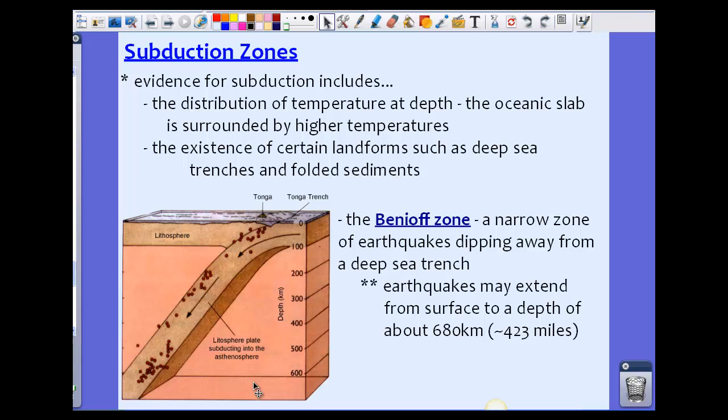At the Benioff zones, we sometimes see deeper-seated earthquakes instead of, for example, other convergent plate boundaries where we might see them typically closer to the surface. The Benioff zone is where we see the deeper earthquakes. These are three pieces of evidence for subduction.